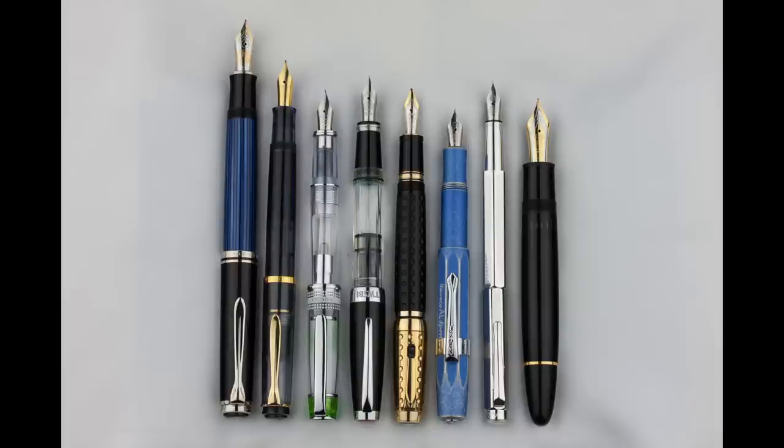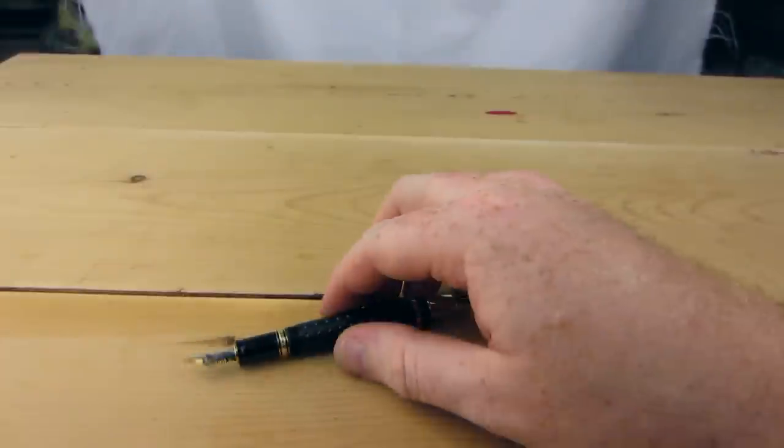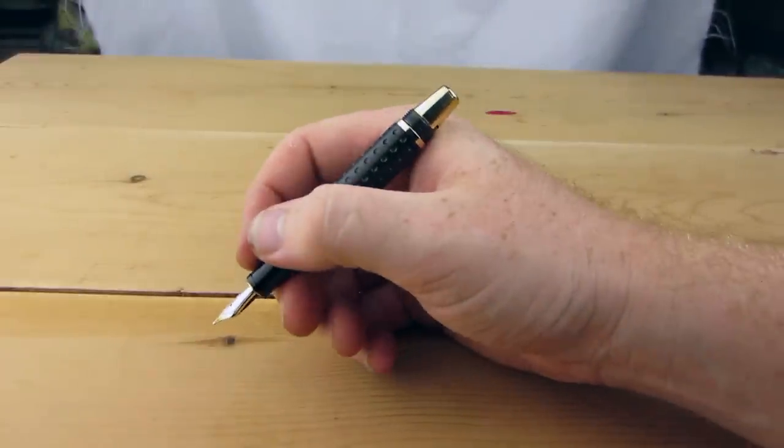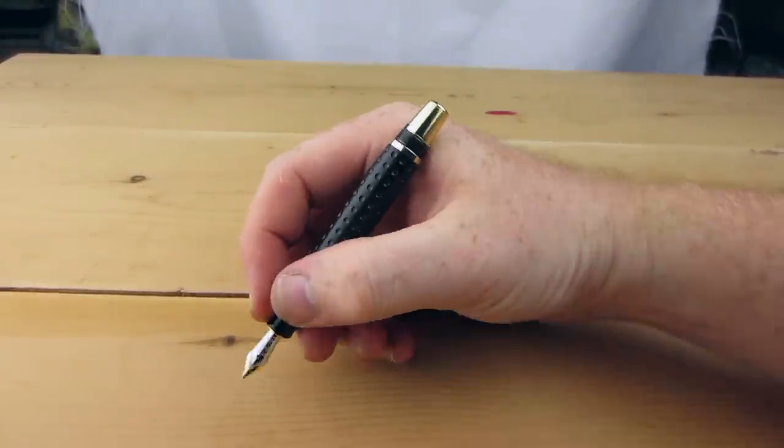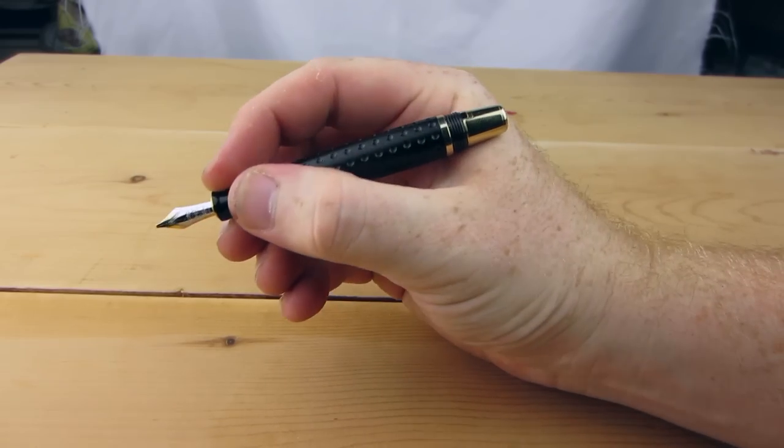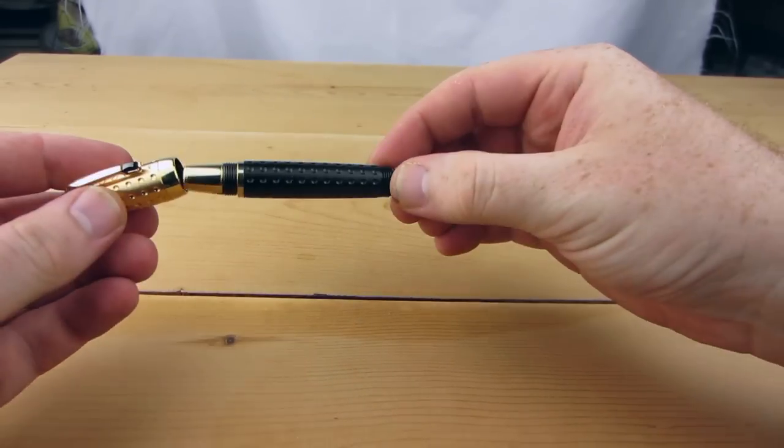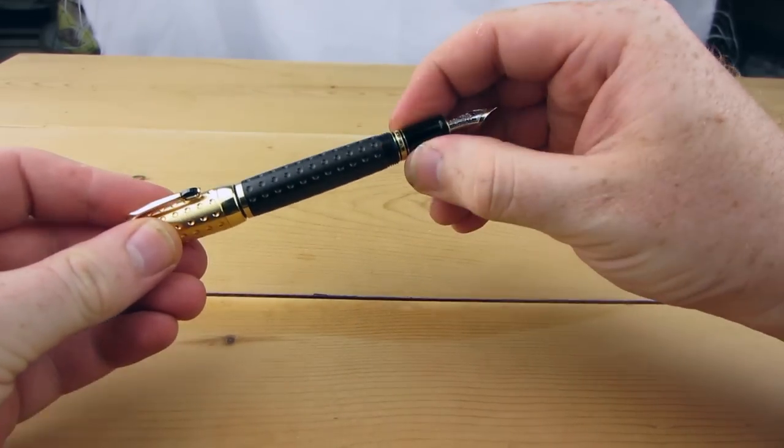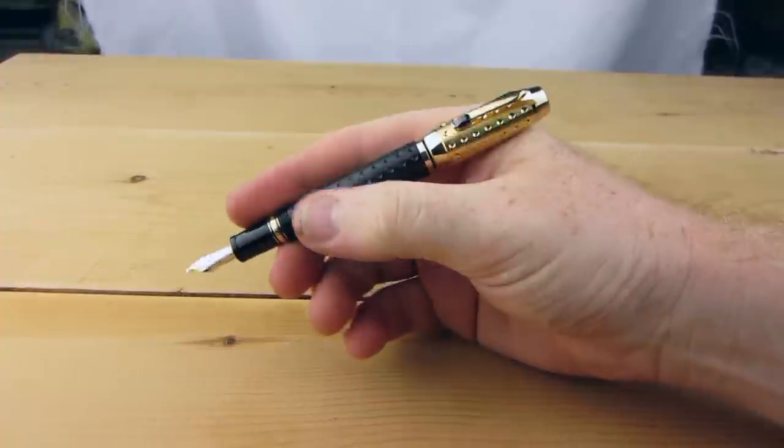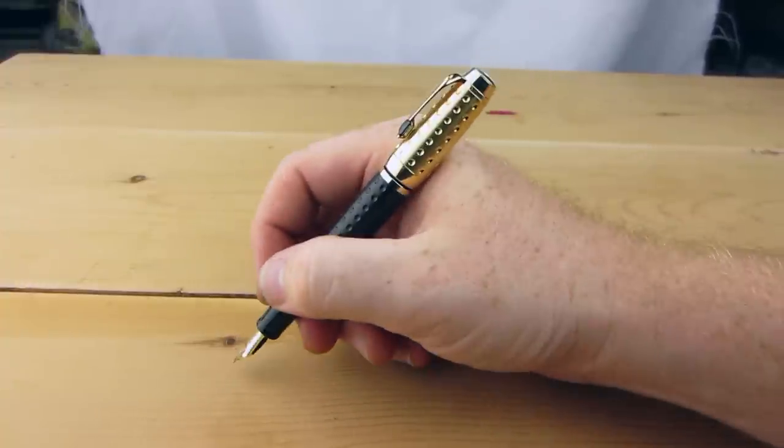As I mentioned before, the Boheme is just too small for me to use not posted. It almost disappears in my hand. And really, it doesn't make sense to not use this pen posted. When you uncap it, you're going to have to twist the end knob, so you might as well use the cap and post it in the process.